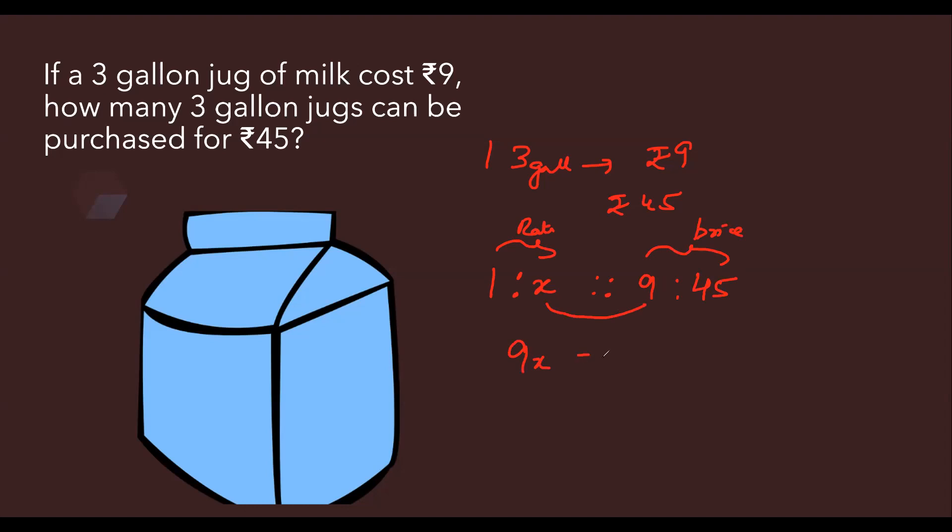Product of means equals to product of extreme. So 9 into x is 9x, 1 into 45 is 45. x from here will be 45 by 9 which is going to give us 5. So there will be 5 three-gallon jugs of milk. I hope you have understood this. So 5 will be our answer here. Any doubts? You can definitely put it down in the comment section.